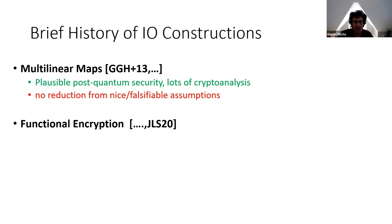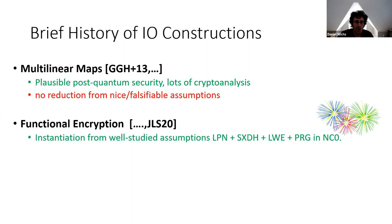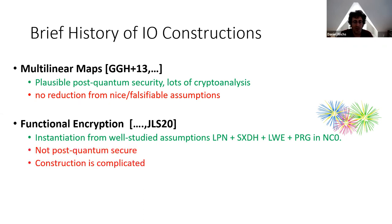A more recent series of works constructs IO using functional encryption. This culminated in a beautiful recent work of Jain, Lin, and Sahai, which showed how to construct IO from a number of well-studied assumptions: namely learning parity with noise, the SXDH assumption (an assumption on bilinear maps), learning with errors, and pseudorandom generators in NC0. This is a really celebrated result, but on the downside it's clearly not post-quantum secure because it relies on bilinear maps, and the construction is complicated, relying on a combination of many different assumptions working in tandem.